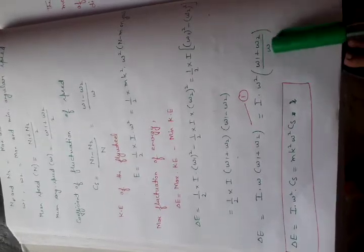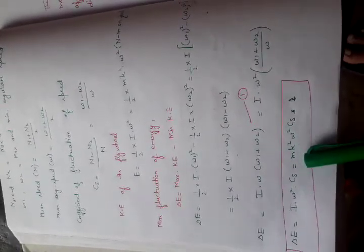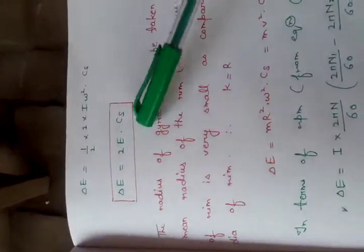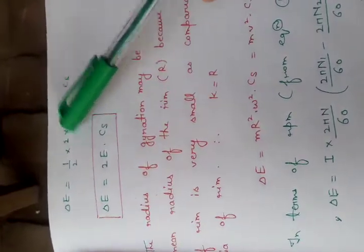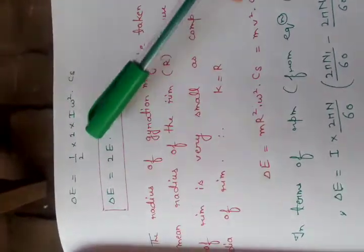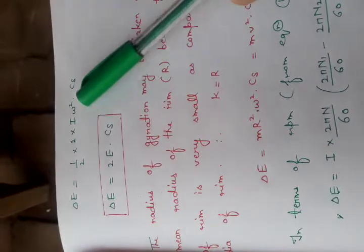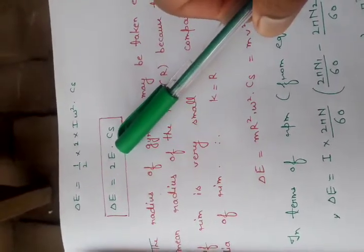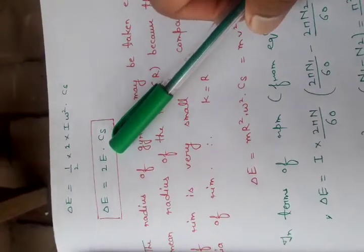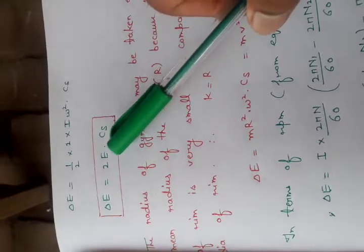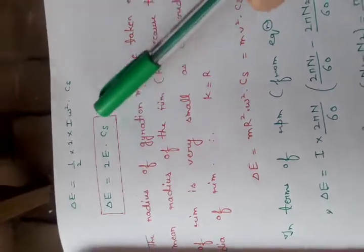This gives us omega 1 plus omega 2 upon 2, multiplied by omega 1 minus omega 2. Here I square is mk square. This is our delta E, multiplied by 2I omega square, which is our E, the kinetic energy, or we can say mean kinetic energy of the flywheel. This is our formula.